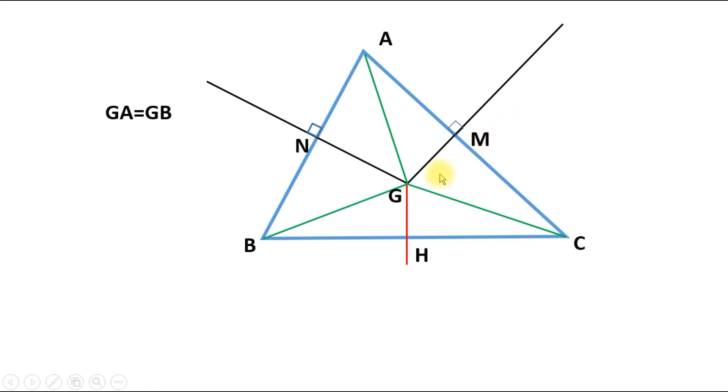For a similar reasoning, because GM is a perpendicular bisector of AC, all points on this line will be equidistant from A and C, therefore we can write GA is equal to GC.